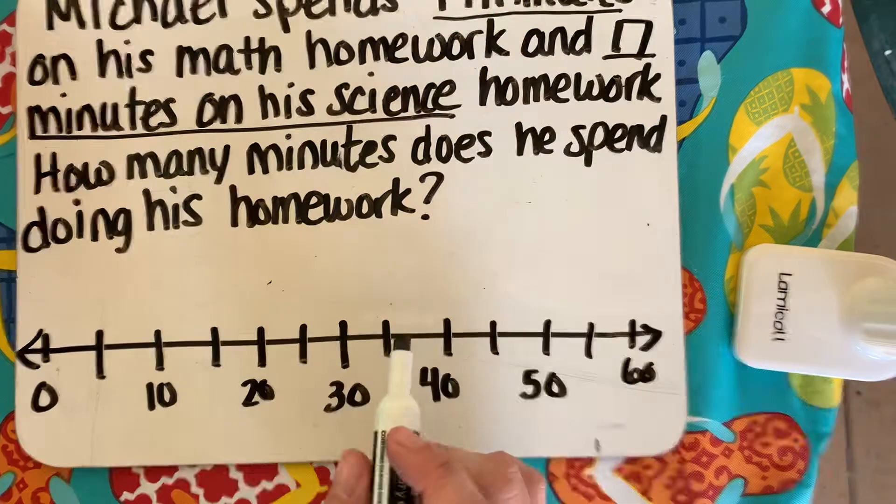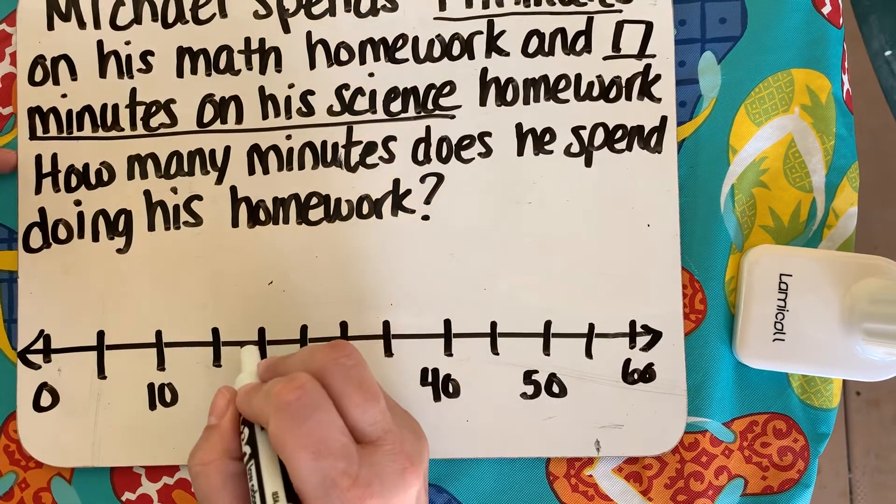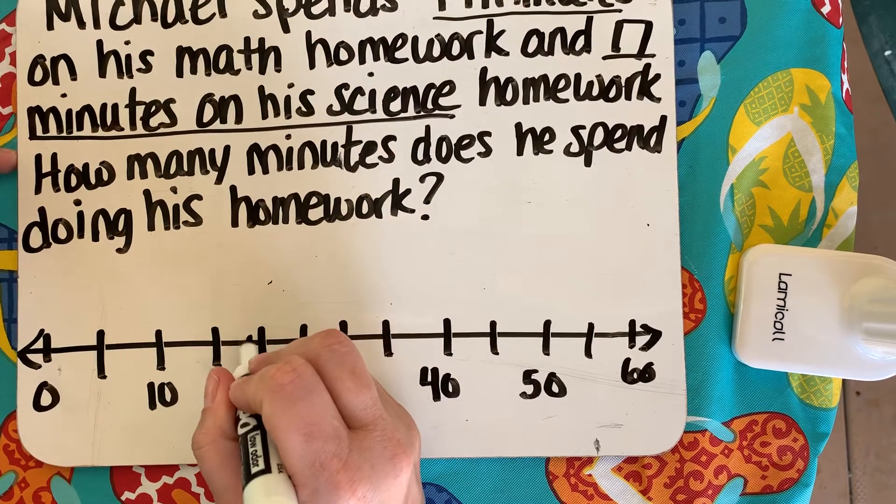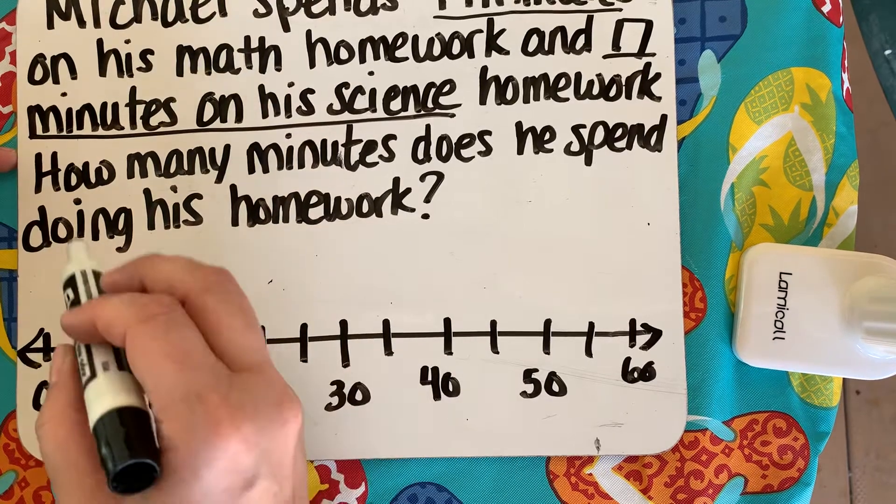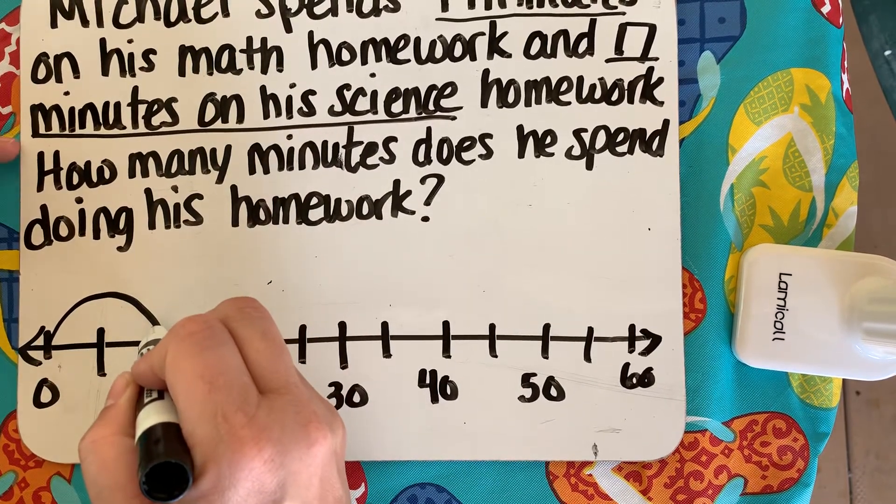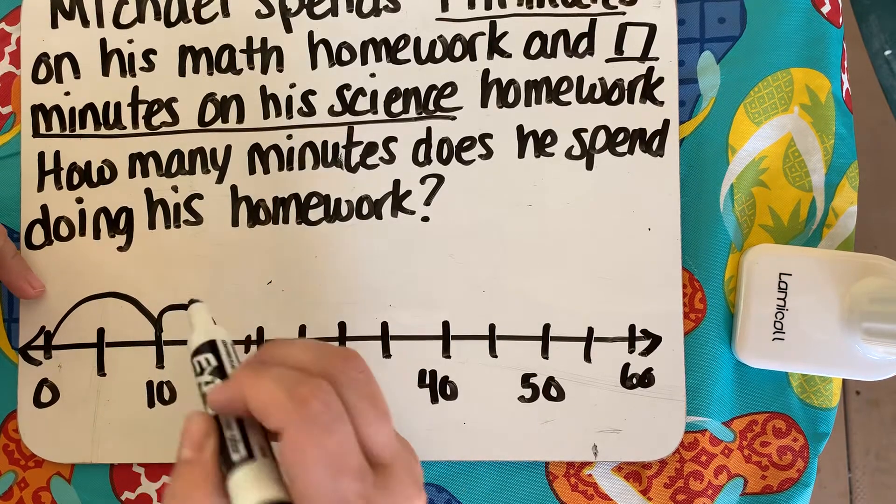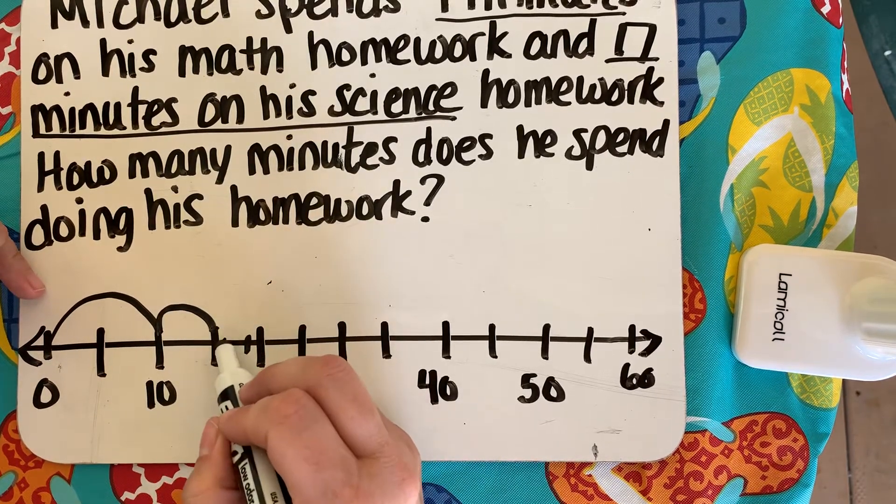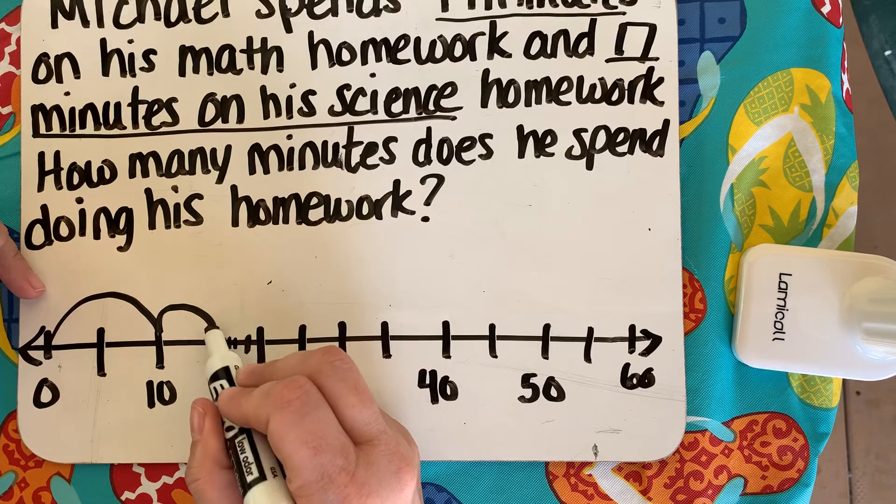So I'm gonna jump right ahead to how many minutes does Michael spend on his homework. I'm gonna go right to 19 minutes. So if I know that this is 19 here's my 19 right here right before that. So I'm gonna do that's 10 and then I'm gonna do a 5 and then I'm gonna do a 1, 2, 3, 4. So there's 4.